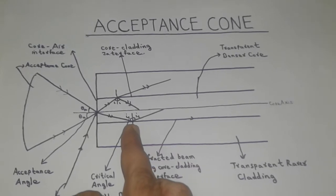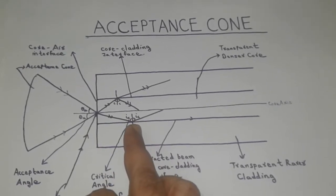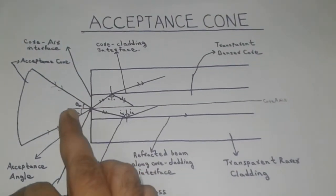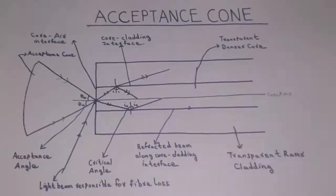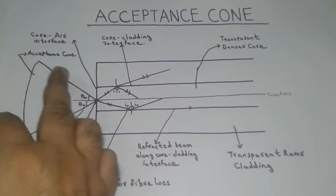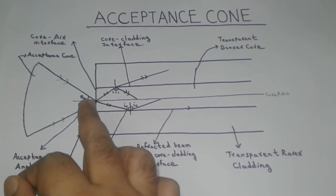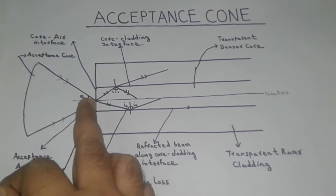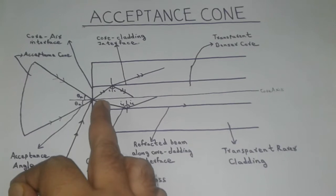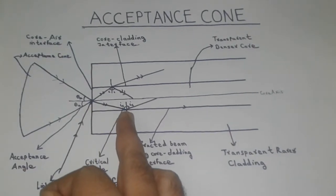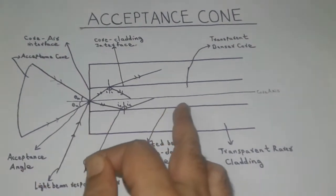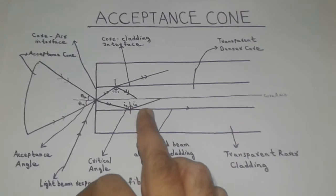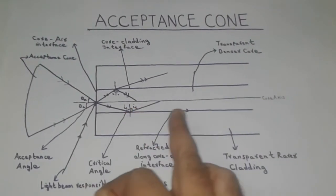The angle which the incident beam makes at the core-cladding interface depends on the angle of incidence which the incident beam makes at the core-air interface. When an incident beam makes an angle theta-a at the core-air interface — which is the acceptance angle — the beam bends towards the normal, is refracted into the core, and is incident at the core-cladding interface at the critical angle. In such a case, the refracted beam will travel along the core-cladding interface.